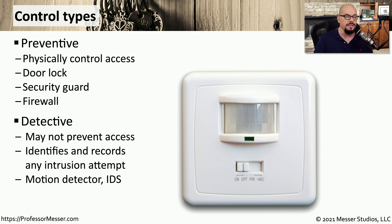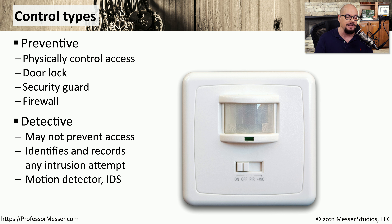A detective control type commonly identifies and records that a security event has occurred, but it may not be able to prevent access. A motion detector can identify that motion is there, but it's not able to stop someone from walking through the room. Similarly, an IDS is set to alarm or alert if it identifies malicious software on the network, but it is designed only to detect that traffic flow, not prevent it.